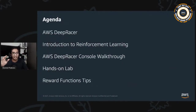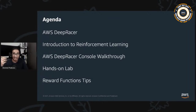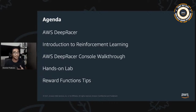Here's how we've structured today's session. We'll start by talking about the origin of DeepRacer and its key components, then shift to reinforcement learning — covering an overview, key terminologies, and how RL works in DeepRacer. We'll also guide you on how to build your first RL model with a step-by-step console walkthrough and hands-on lab, so you can build, train, and run your first AWS DeepRacer model.